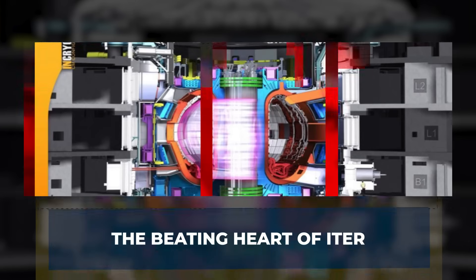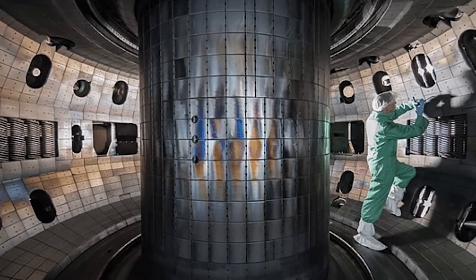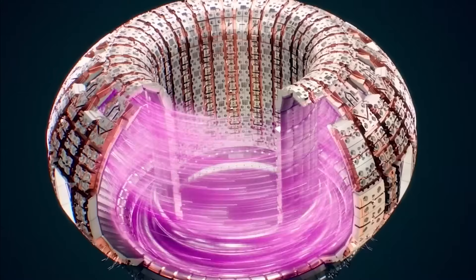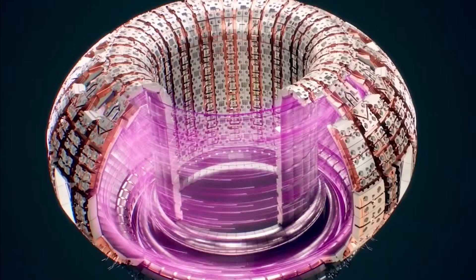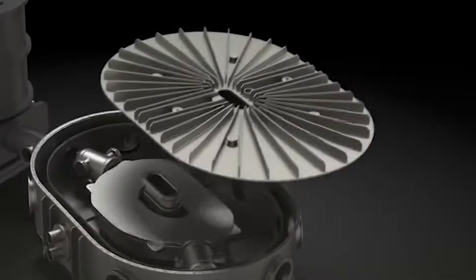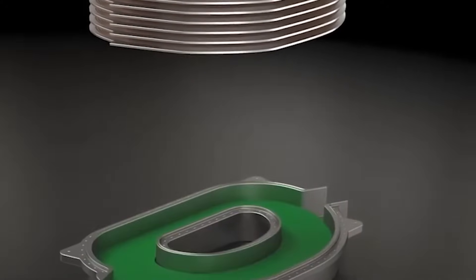At the core of ITER lies a machine unlike anything humanity has ever built, the central solenoid. Think of it as the beating heart of the reactor, the giant electromagnet that drives electric current through the plasma, shaping it and stabilizing it so fusion can take place. Without it, ITER simply would not function.